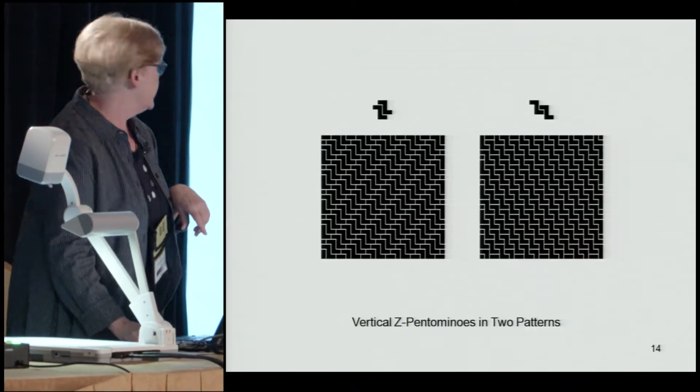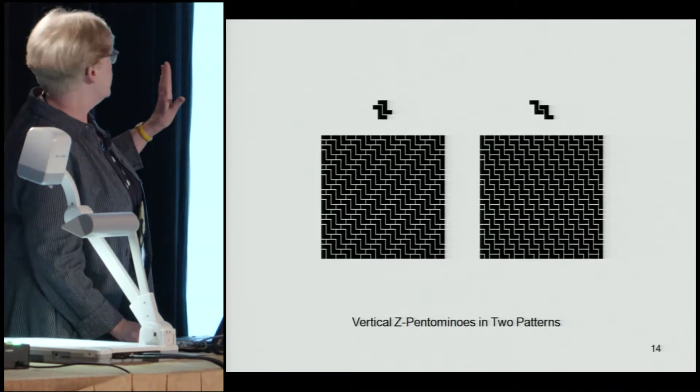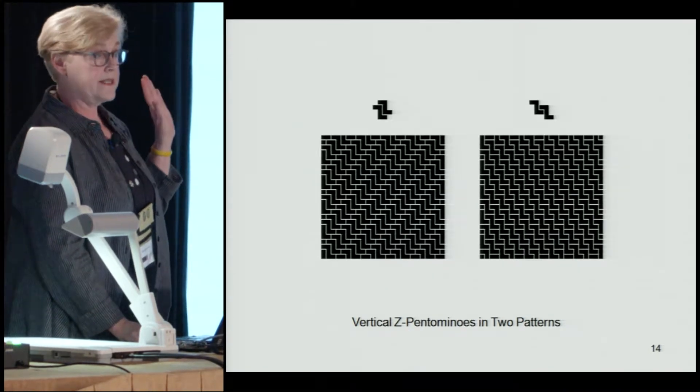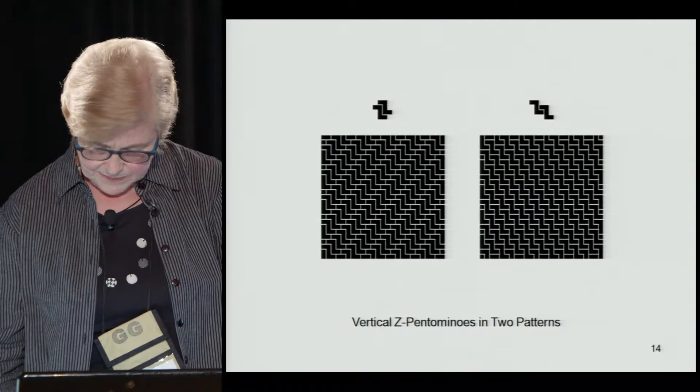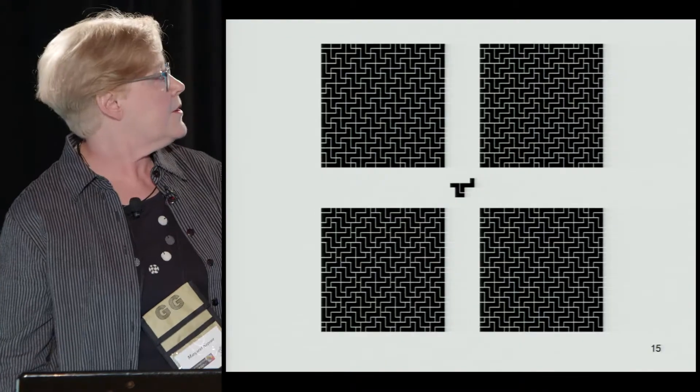So what are the patterns I can make? I said there were six. Well, here are two that are made with the vertical or upright Z, kind of spooned together in two different ways.